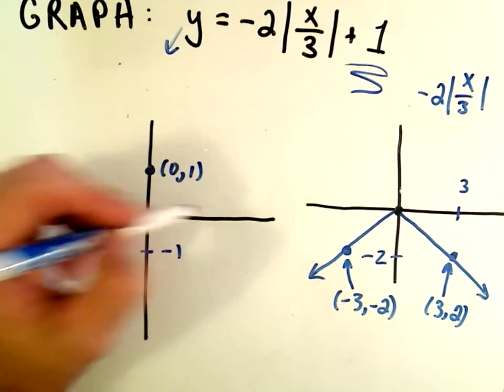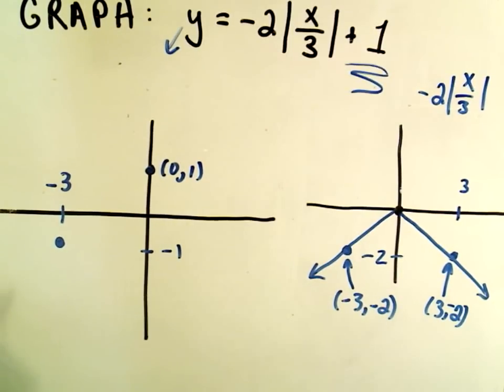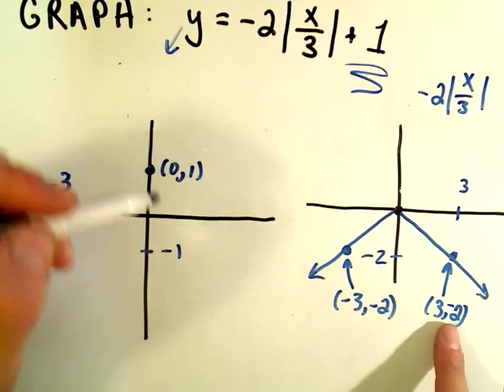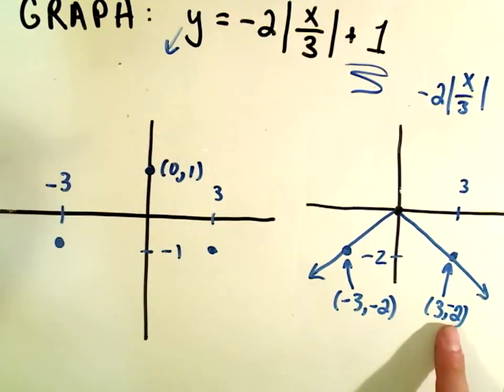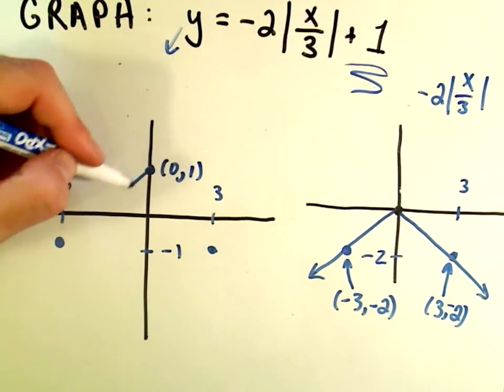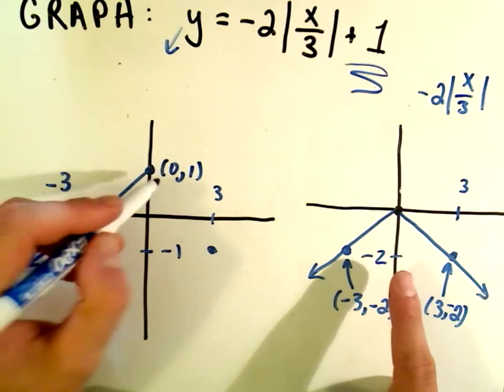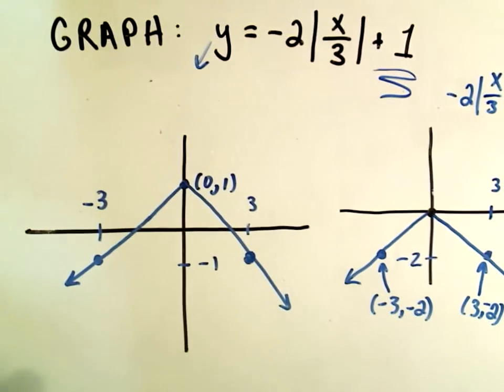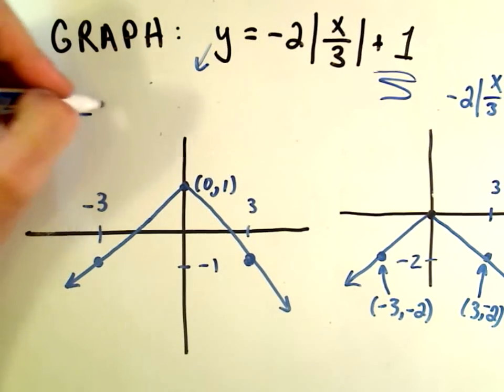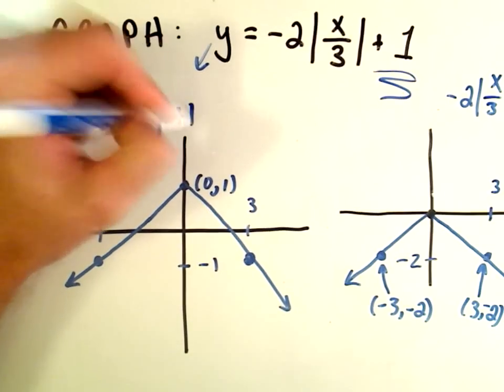Negative 3, negative 2, if you move that up one unit, it's now going to be sitting at negative 3 comma negative 1. Likewise, 3 negative 2 is now going to be sitting at 3 comma negative 1. And we play connect the dots. The shape stays the same. We just move the graph up one unit. And there would now be our final graph, negative 2 times the absolute value of x over 3 plus 1.